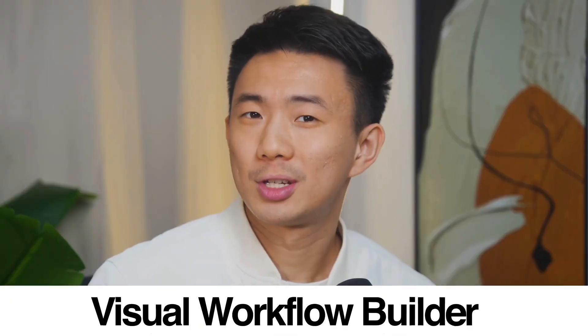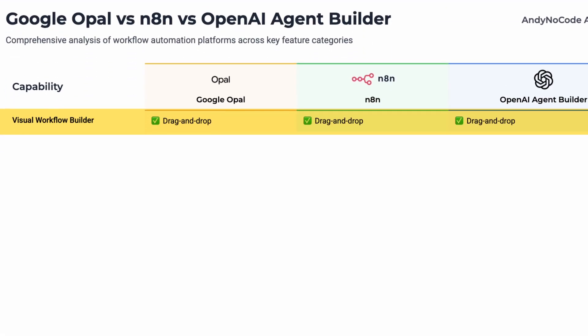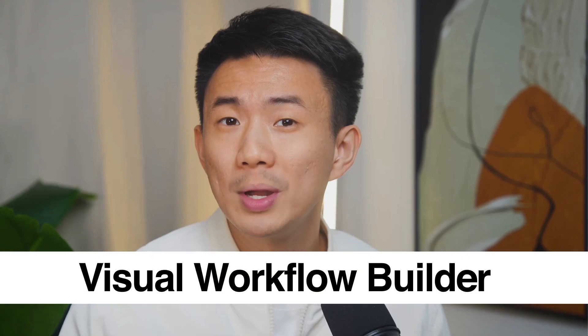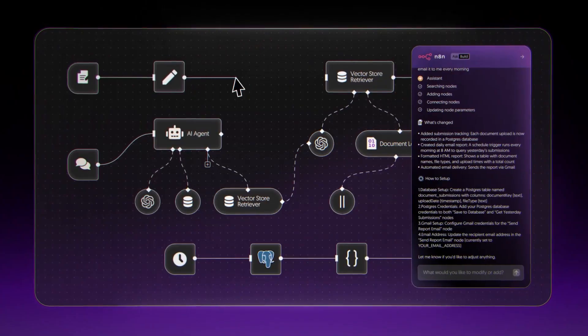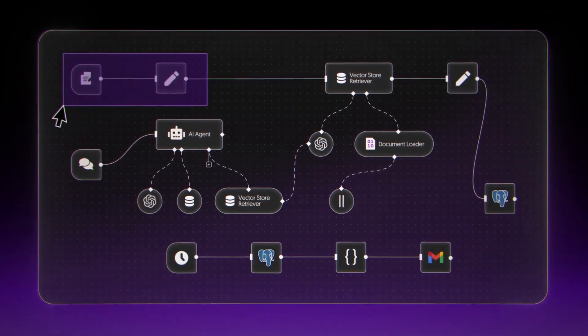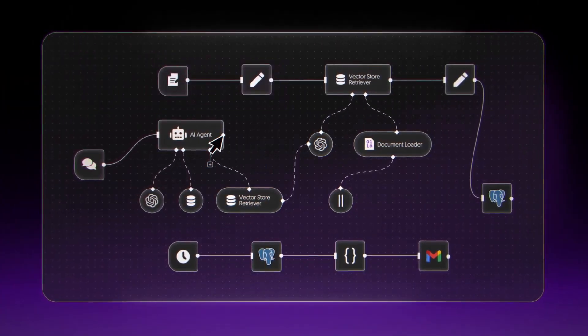So first, visual workflow builder. All three — Google OPPO, NN, and OpenAI's Agent Builder — use visual nodes. So you drag, drop, and connect logic. They look similar at first glance, but what happens under the hood is completely different.